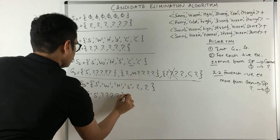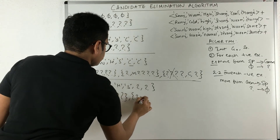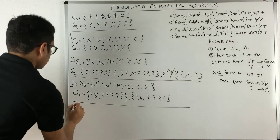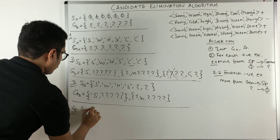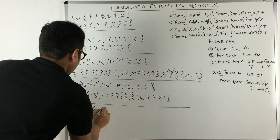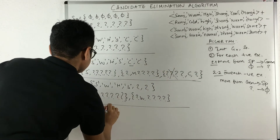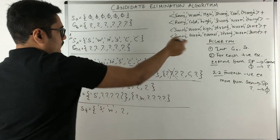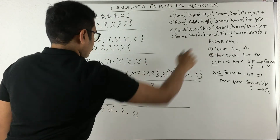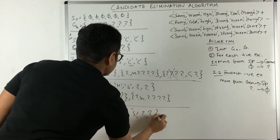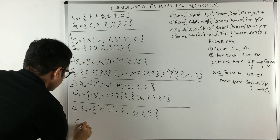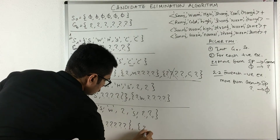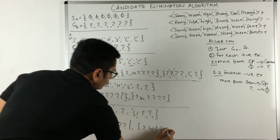In the fourth iteration, S4 is updated: sunny, warm, then a question mark for the third attribute (normal vs. high disagreement), strong, and question marks for the remaining attributes. G3 remains the same as before, with the remaining general hypotheses across all six attribute positions.